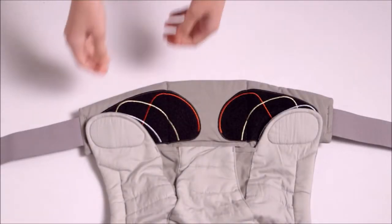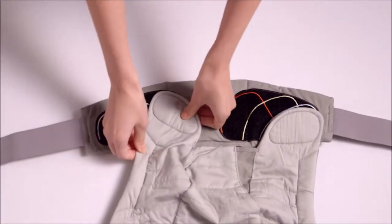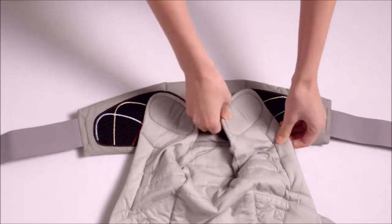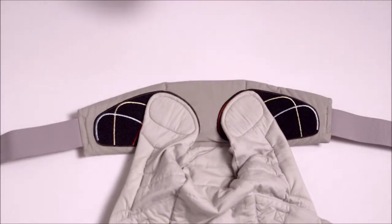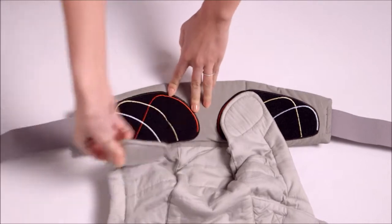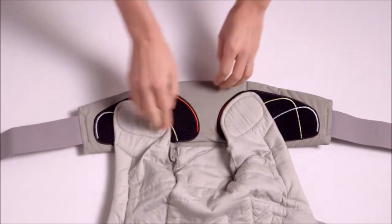For a newborn, attach the tabs on the velcro following along the red lines. When baby is around three months old, you will move the tabs to the medium setting following along the yellow lines.